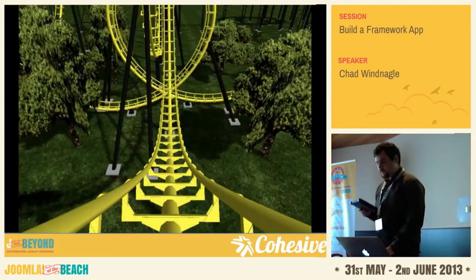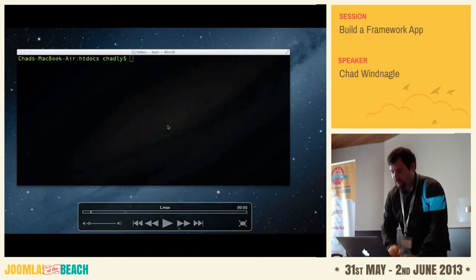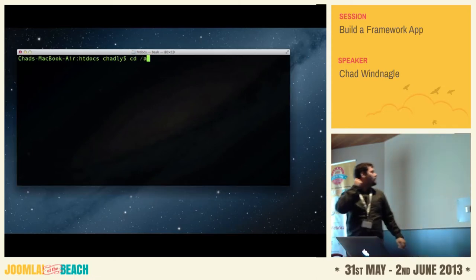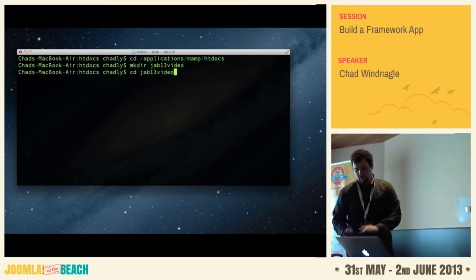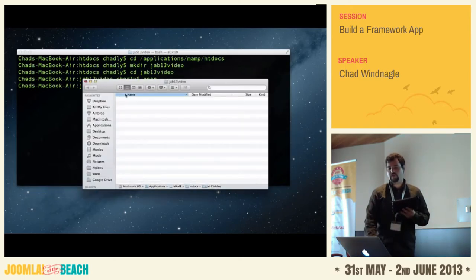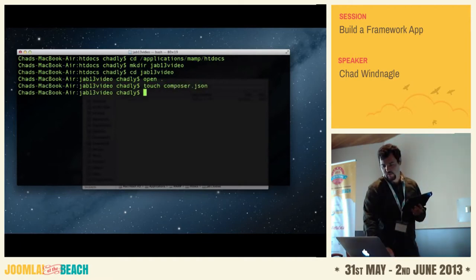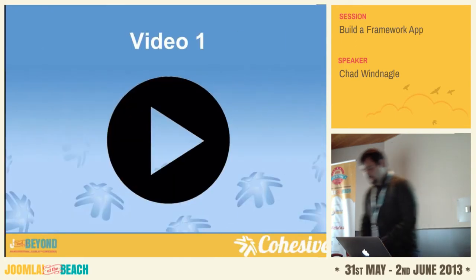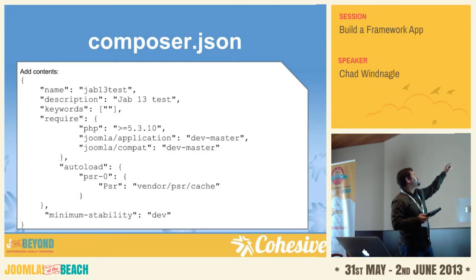We're going to do the fun part — a little bit of a rollercoaster ride. I have a video where I set up the project folder and get Composer ready to go. I'm using the command line here. I'm going to create a directory, enter that directory, and create a new file called composer.json. Now I have this file called composer.json and what I'm going to do is add some contents. You can see this is a JSON encoded string, and I'm just going to give it a name and a description.